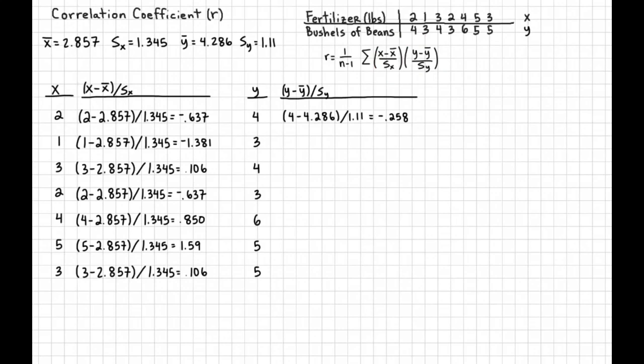Let's try the data point 3. So it's going to be 3 take away 4.286. Now again, where does the 4.286 come from? That's the mean. We do 3 take away 4.286, then divide by 1.11. 1.11 is the standard deviation for y. We do that math. We get negative 1.16.